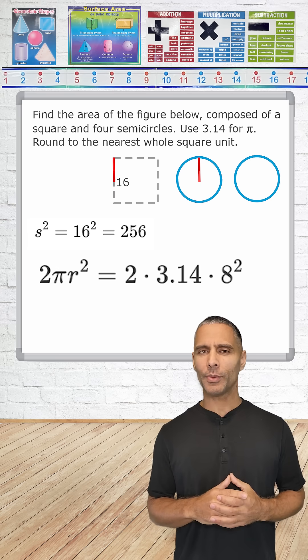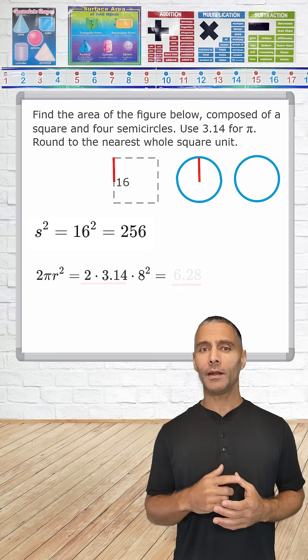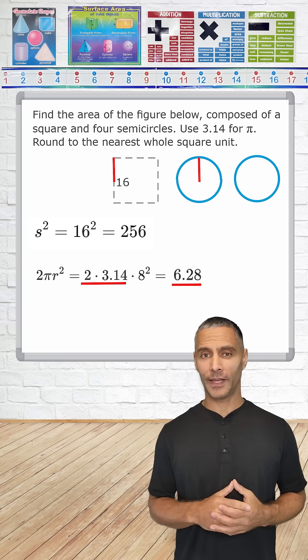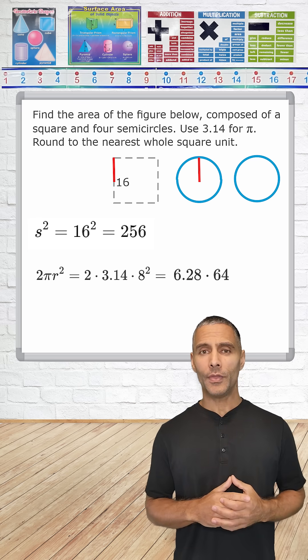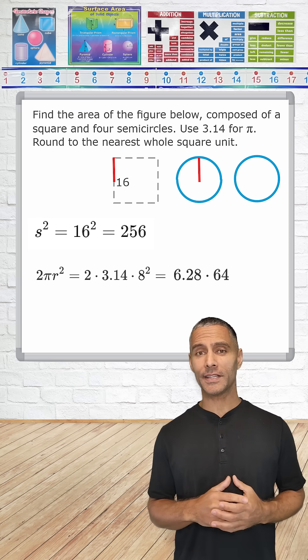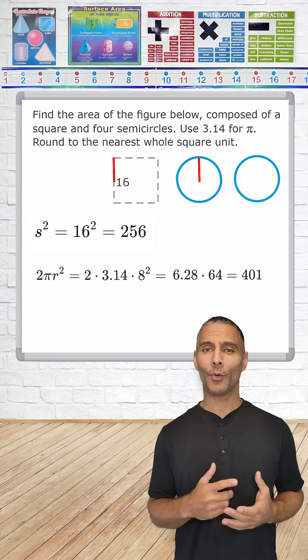All right, so let's multiply 3.14 by 2, which gives 6.28, and multiply that by the square of 8, which is 64. Then we multiply 6.28 by 64, which results in 401.92.